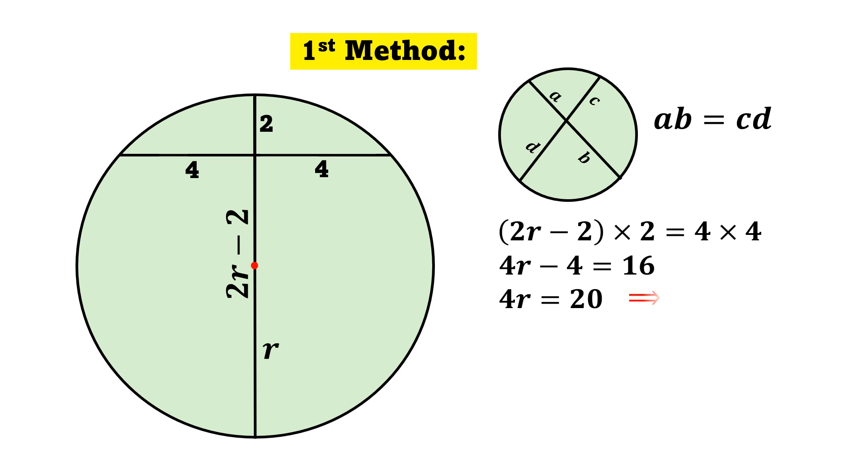Dividing both sides by 4, we will get R is equal to 5. Since we know that area of a circle is equal to pi R square, that is equal to pi times 5 square, and thus the area of the circle is 25 pi square units.